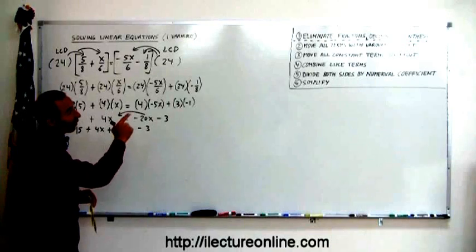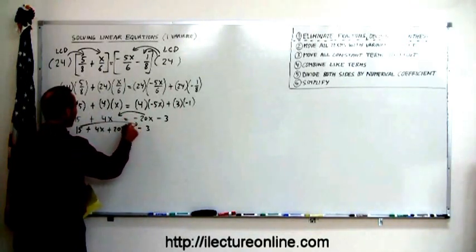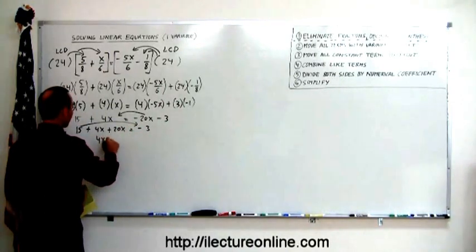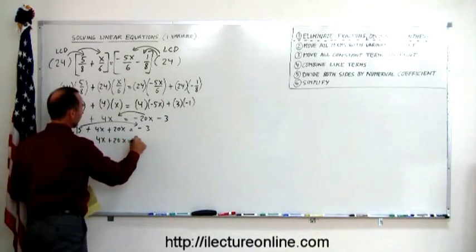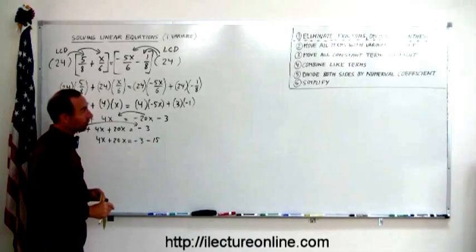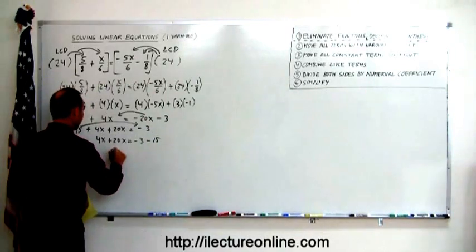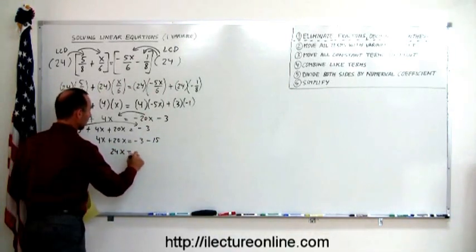Then the next step says move all the constant terms to the right. So I still have a 15 on the left. That has to move to the right. So we have 4x plus 20x equals minus 3 minus 15. Then it says combine all like terms. So this becomes 24x. And this becomes minus 18.